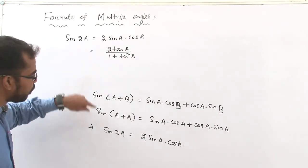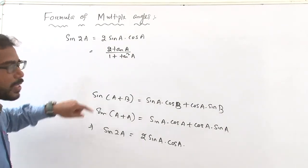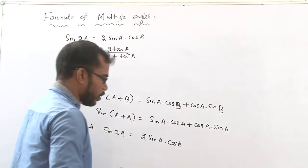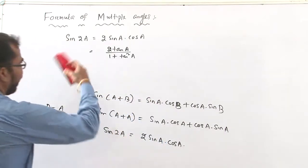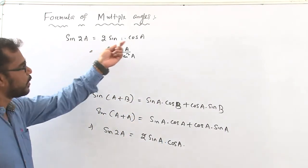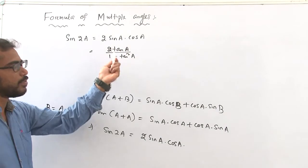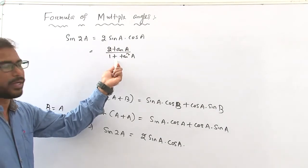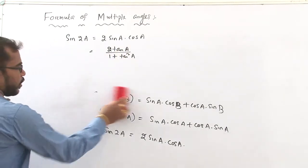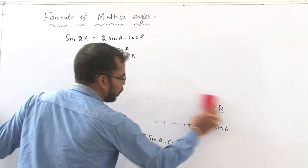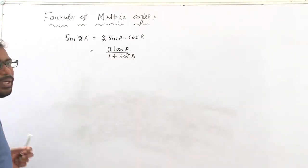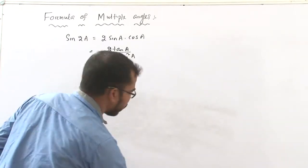Similarly, you can derive the division form: 2 sin a into cos a can be written as 2 tan a by 1 plus tan square a. So there are two formulas for sin 2a.